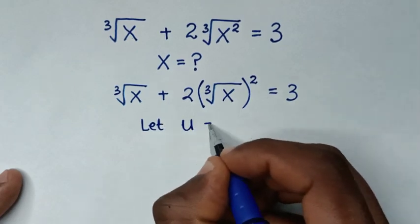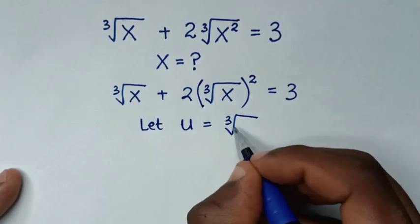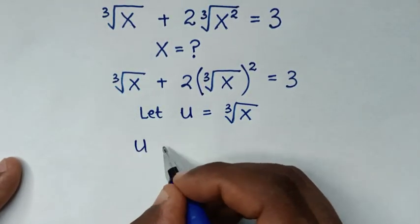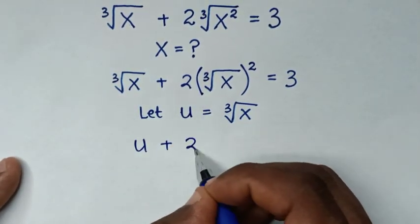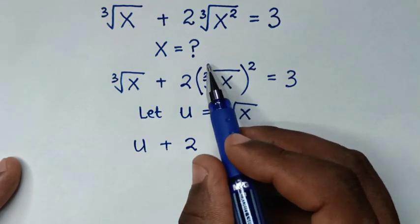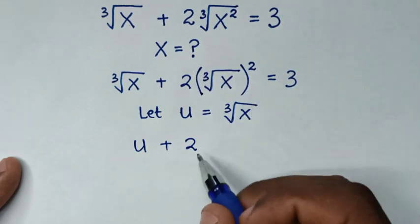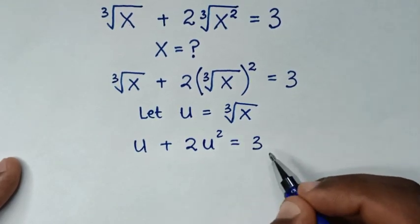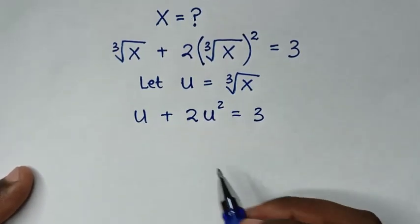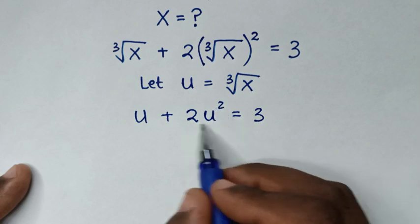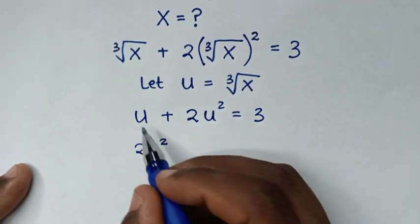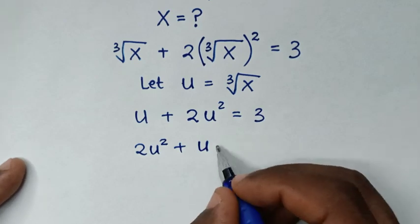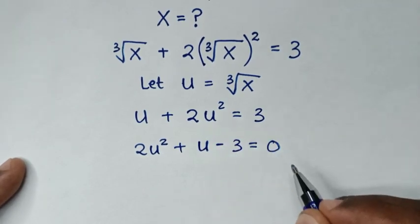Let u equal cube root of x. Then our equation becomes u plus 2 times u squared equals 3. Rearranging, we get 2u squared plus u minus 3 equals zero.